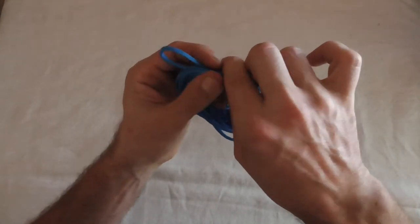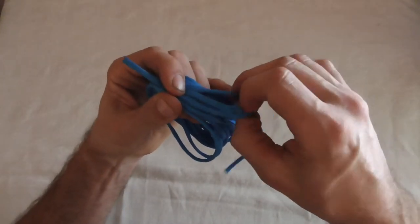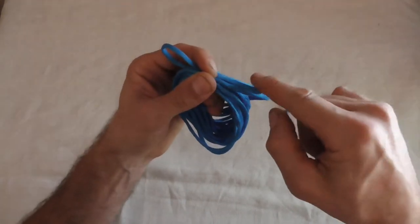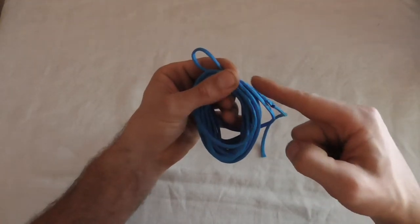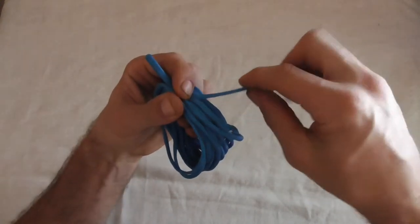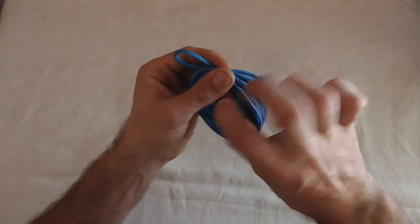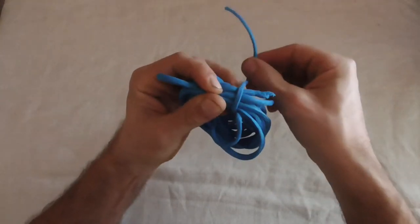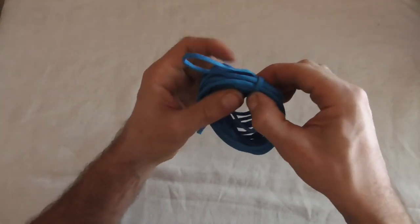We'll just lay that on the top, then we'll grab the free end and all we're going to do is we're going to take wraps around the coil towards that loop. Pull it through and just take a few wraps.